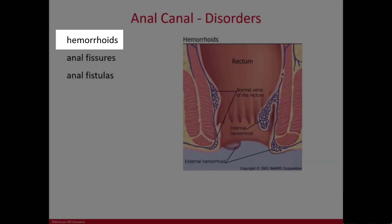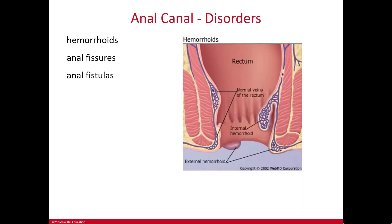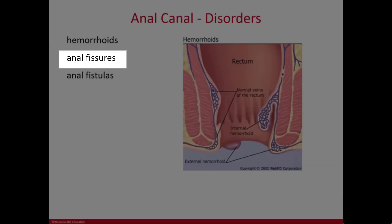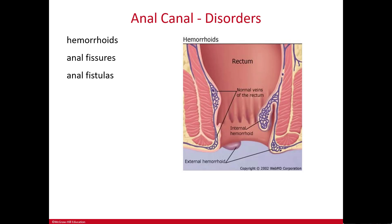Hemorrhoids are the most common anal disorder — they are varicose or dilated veins in the submucosal lining of the anal canal. They can be internal or external and are associated with increased pressure from pregnancy, chronic constipation, or aging. A thrombosed hemorrhoid, where blood has clotted inside the vein, is very painful. Anal fissures are tears in the lining of the anal canal, occurring with hard bowel movements from constipation, straining, or foreign bodies in the rectum.